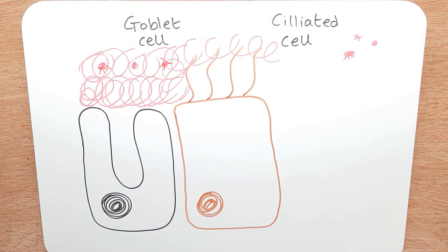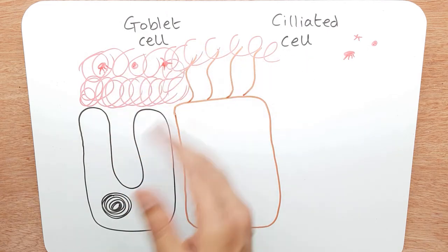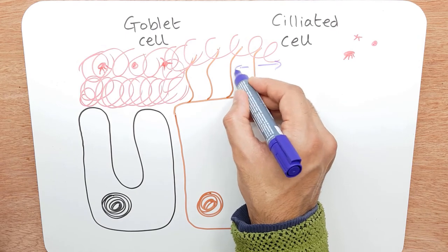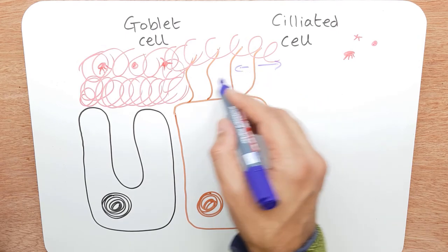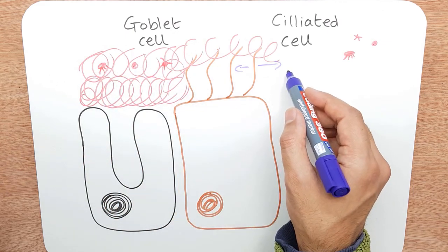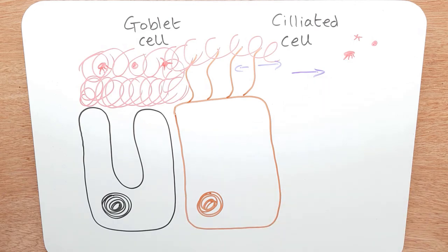And then the job of the cilia is to waft it back out, to move it back out. So these start moving backwards and forwards. All this mucus along with the bacteria moves up towards the throat so you can clear it out.